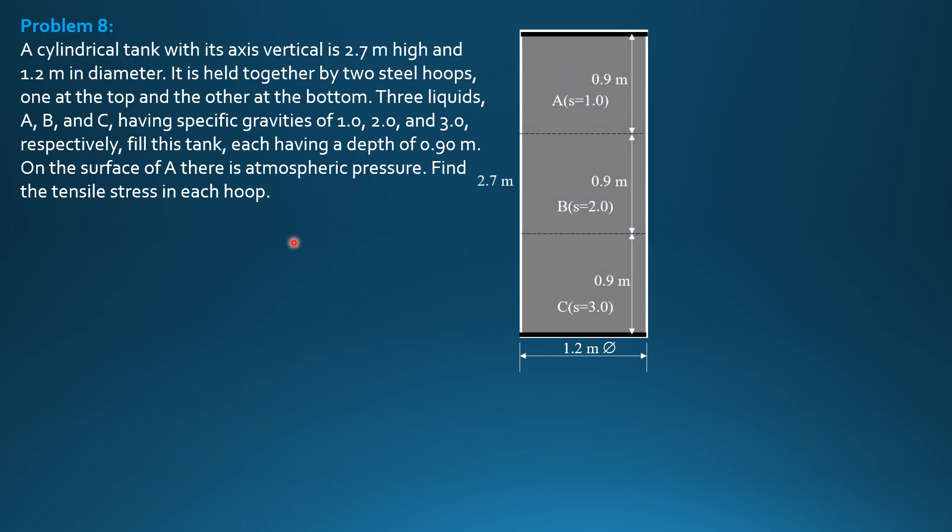So this is the figure. I lengthen the height so that it's clear the pressure diagram later. So 0.9 meter each layer, different liquids, 1, 2, 3 specific gravities, diameter 1.2 meters.